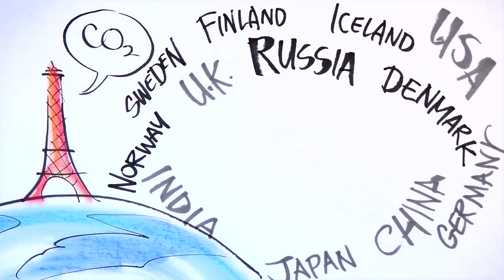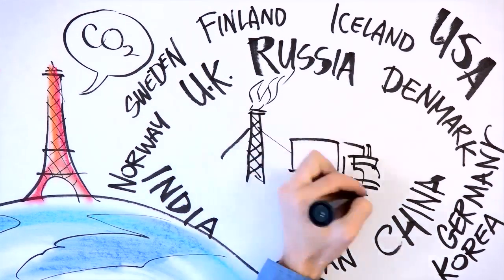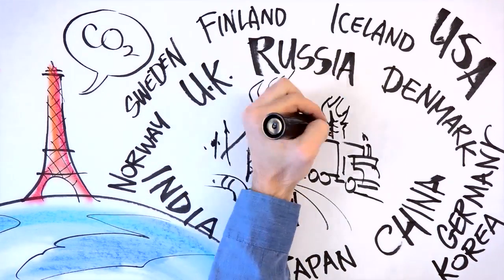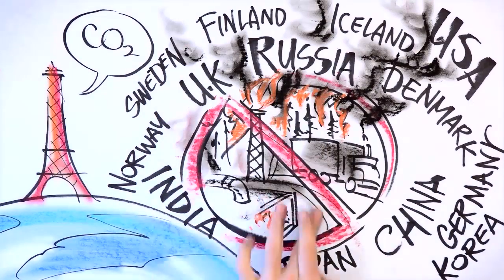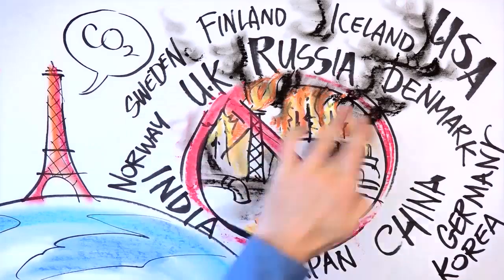And Arctic nations and other major polluting countries must reduce black carbon pollution. Black carbon, also known as soot, is a potent driver of Arctic warming, so emitting less of it will deliver immediate benefits.